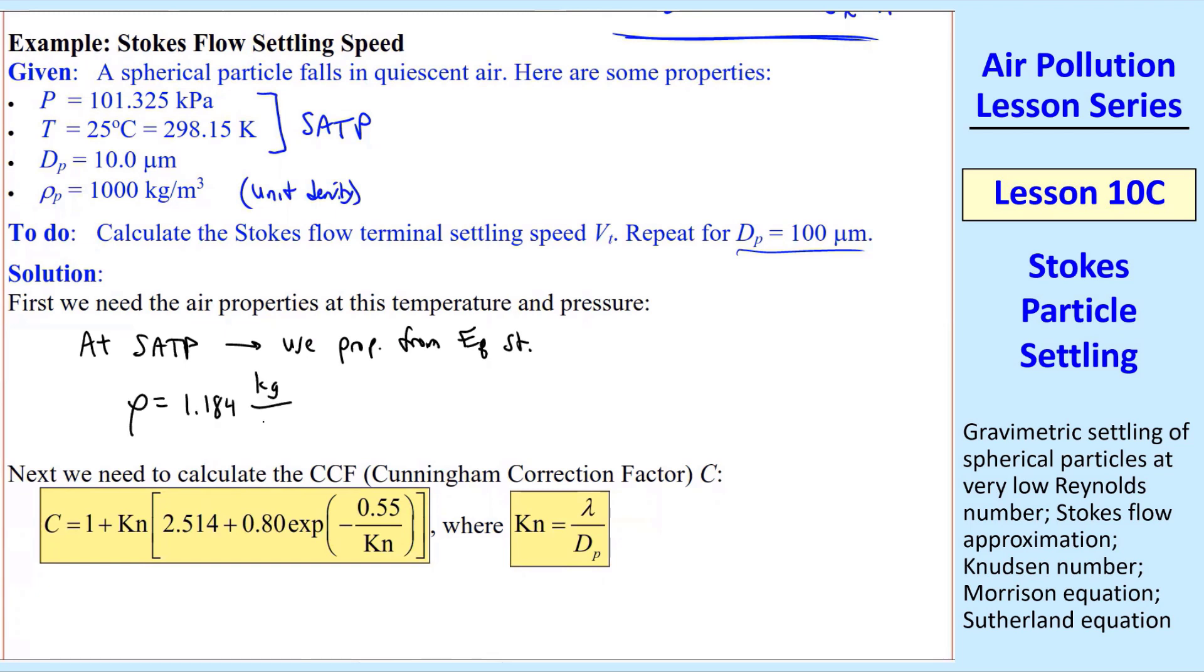we would use rho equal 1.184 kg per meter cubed. Mu is equal to 1.849 times 10 to the minus 5th kg per meter second. And lambda, mean free path, you would normally have to calculate that as well, 0.06704 microns.